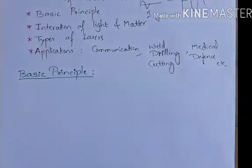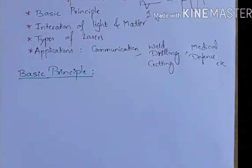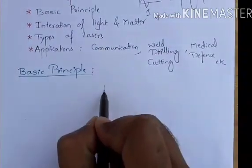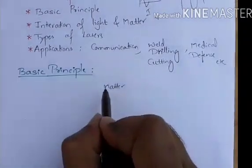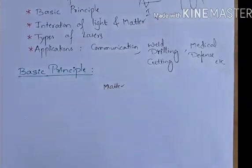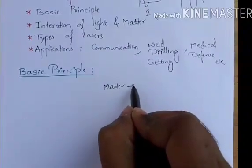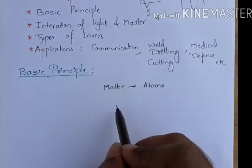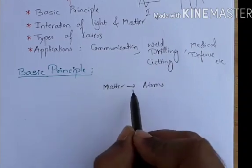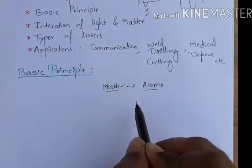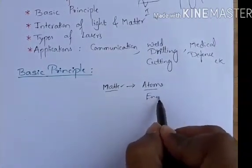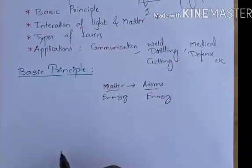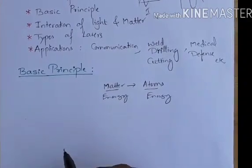Now let us understand the basic principle behind lasers. For that we have to consider matter. The laser emits from the matter. Matter consists of atoms, so the light which is coming is coming from the atoms. All the atoms in the matter will have some kind of energy, and we can indicate this energy with an energy level diagram.